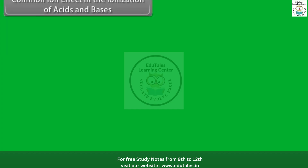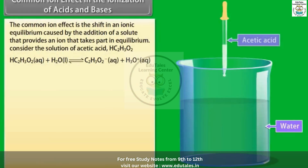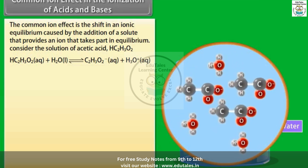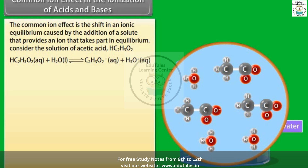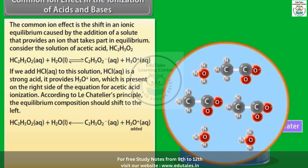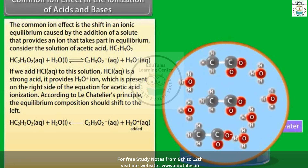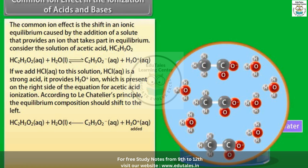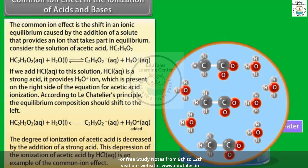Common ion effect in the ionization of acids and bases. The common ion effect is the shift in ionic equilibrium caused by the addition of a solute that provides an ion taking part in equilibrium. Consider acetic acid (HC₂H₃O₂) solution. If HCl(aq) is added — a strong acid providing H₃O⁺ — according to Le Chatelier's principle, the equilibrium shifts to the left. The degree of ionization of acetic acid is decreased. This depression of ionization by HCl is an example of the common ion effect.